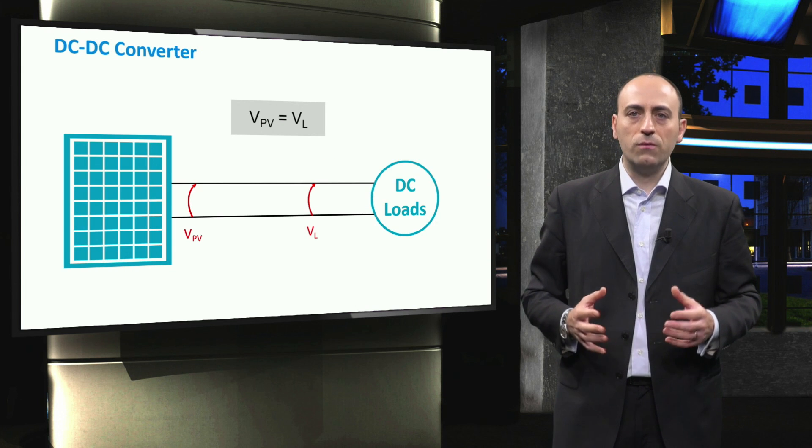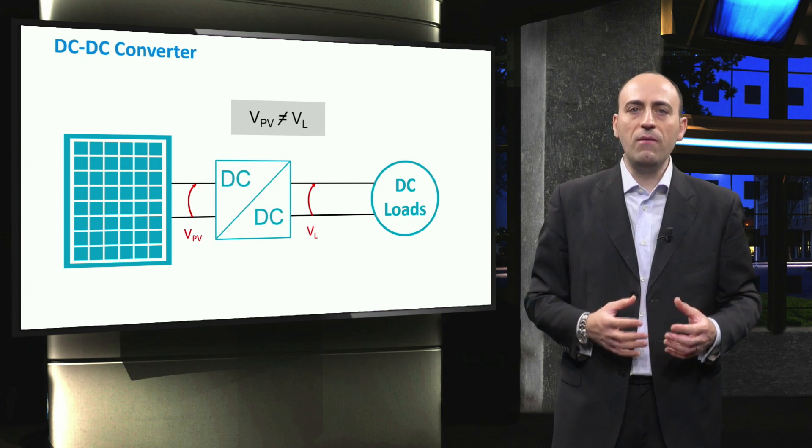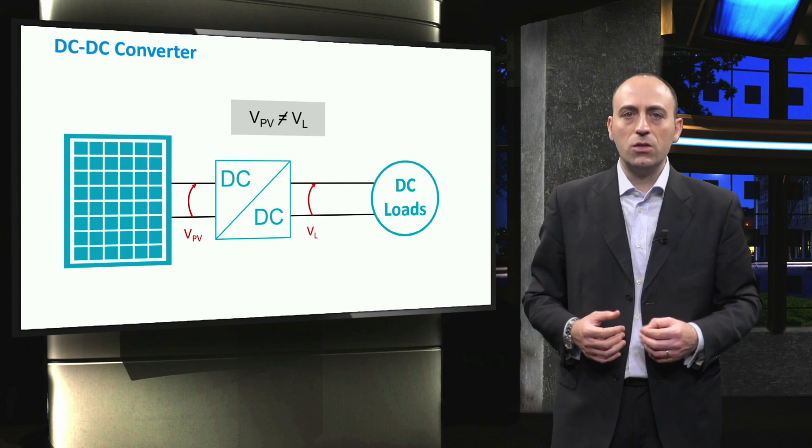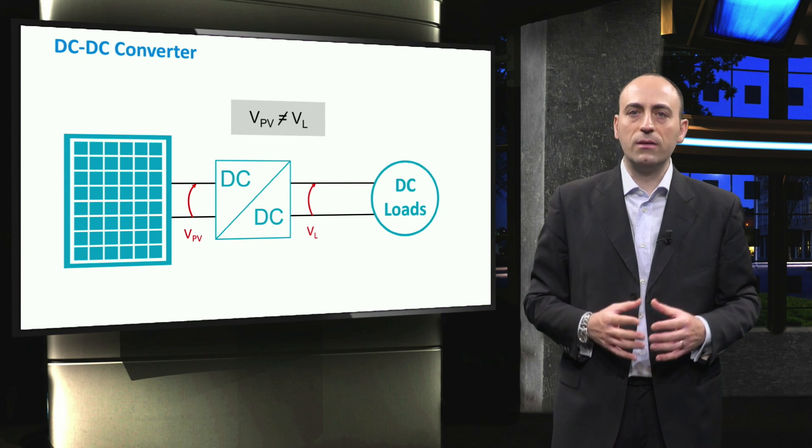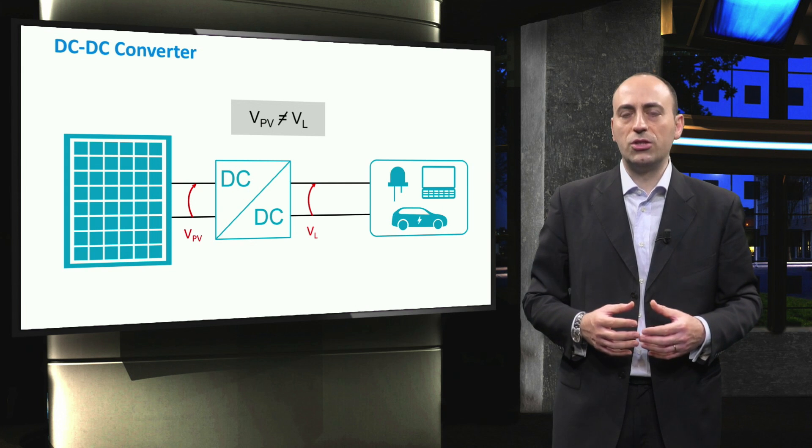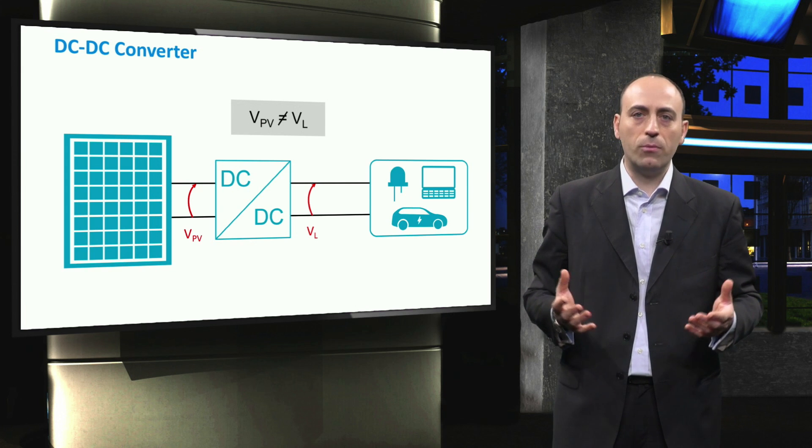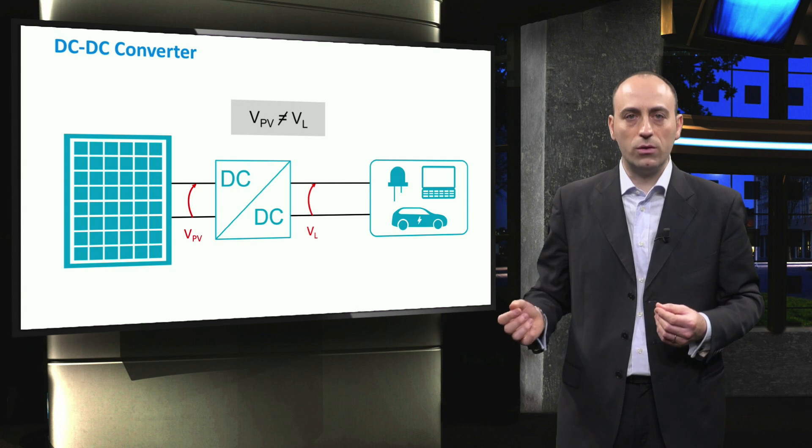The purpose of the DC-DC converter is to decouple the PV voltage from the load voltage so that the PV panel can work at its optimum, while the load, such as an LED, a laptop, or a car, is supplied with its rated voltage.